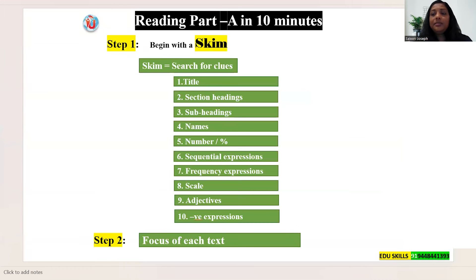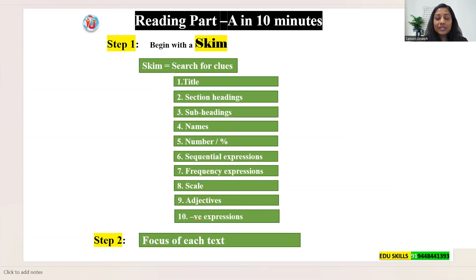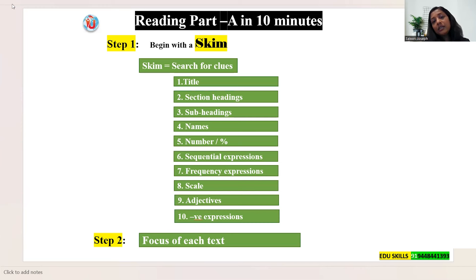Reading Part A in 10 minutes. Step 1: begin with a skim. Most people think you need to scan, but scanning is different from skimming. Skimming means reading only some of the words — not completely. Reading completely is scanning. When skimming you underline important words; not even a complete sentence. For most questions you don't need to scan — only skimming is sufficient to find the answer.